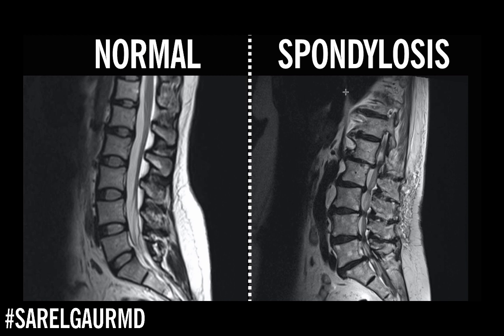Spondylosis is a poorly understood term. Unfortunately, it's a term that will continue to be utilized by medical professionals. What does it literally mean? There are really two parts to the word. The first part is 'spondylo,' which is Greek for spine. The second part, 'osis,' means pathologic condition. So the word literally means pathologic condition of the spine. But what does that mean specifically?